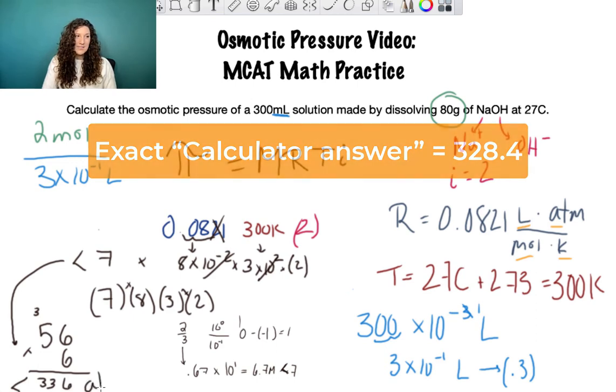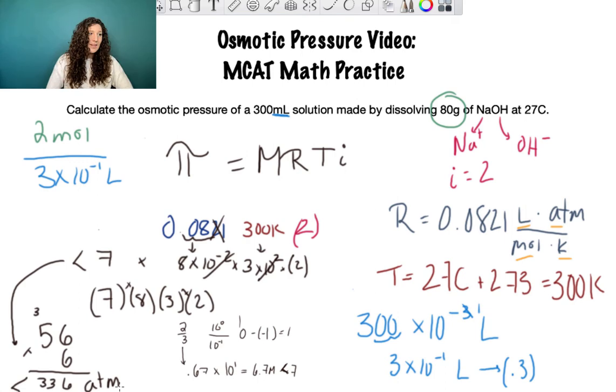I know that seemed like a lot but we can do all of this math without a calculator and get close enough to get the right answer on test day. By the time we started doing our plug and chug math we know we'll have a number definitely greater than 100. So if there's answer choices like 0.8 or 0.3 or even 10 atmospheres, we know those are wrong and we're looking for an answer greater than 100. Every step of the way check the answer choices and eliminate anything you know is nowhere close.